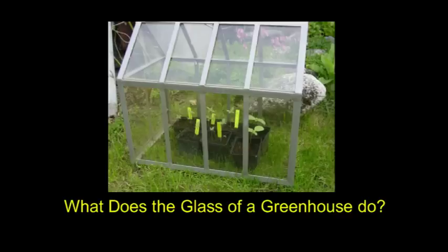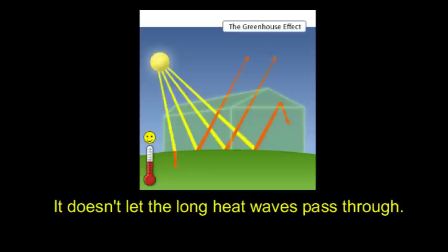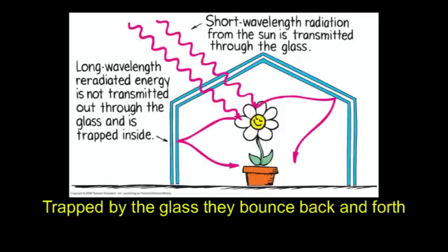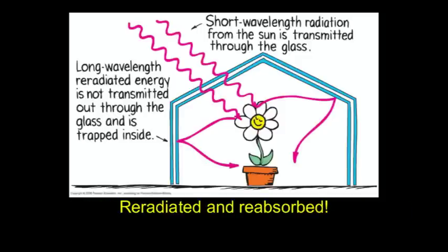What does the glass of a greenhouse do? It doesn't let the long waves pass through. Trapped by the glass, they bounce back and forth. Re-radiated and reabsorbed.